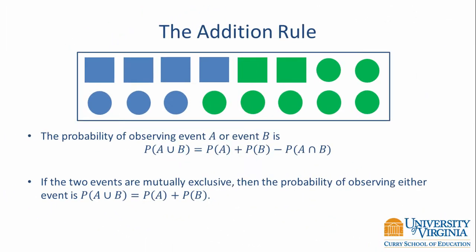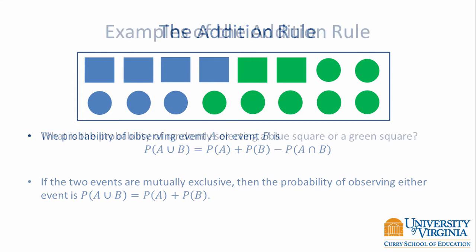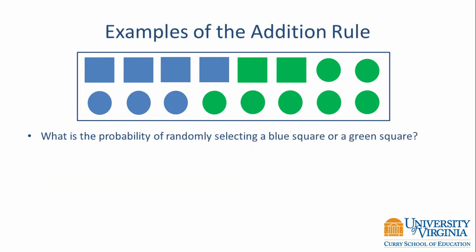Let's return to our example with different shapes and compute the probability of the union of two events. What is the probability of randomly selecting a blue square or a green square? These two events are mutually exclusive because there's no square that is both blue and green. Using the simplified addition rule, we take the probability of a blue square plus the probability of a green square, which equals 4/16ths plus 2/16ths, giving us 6/16ths.